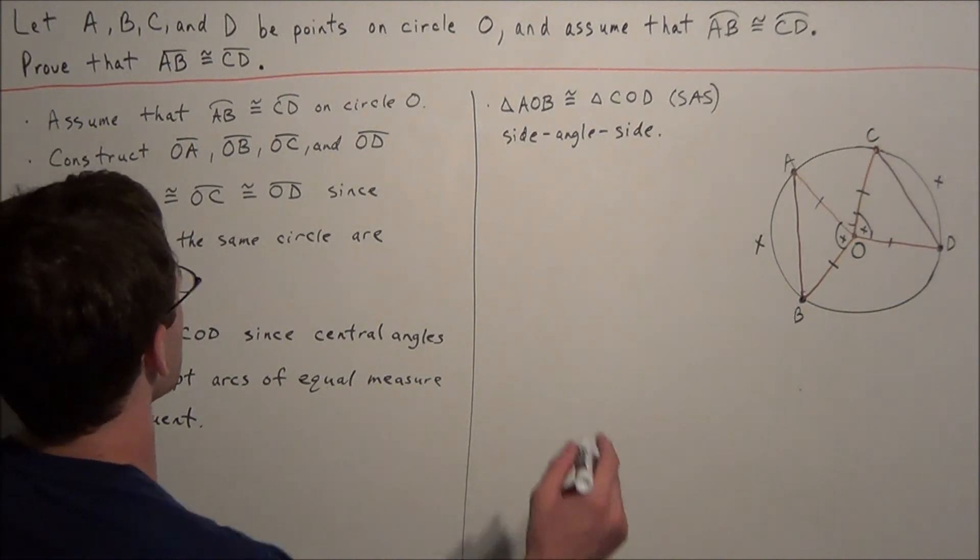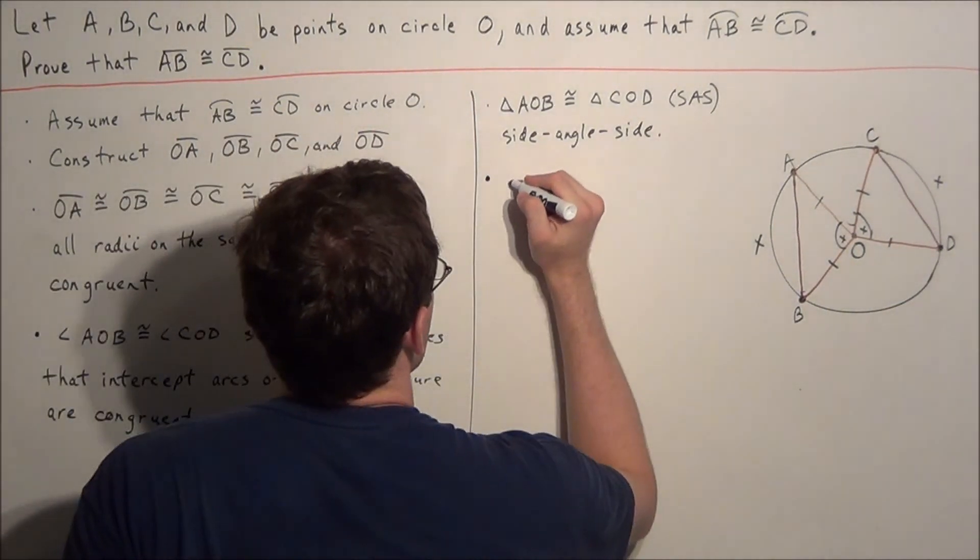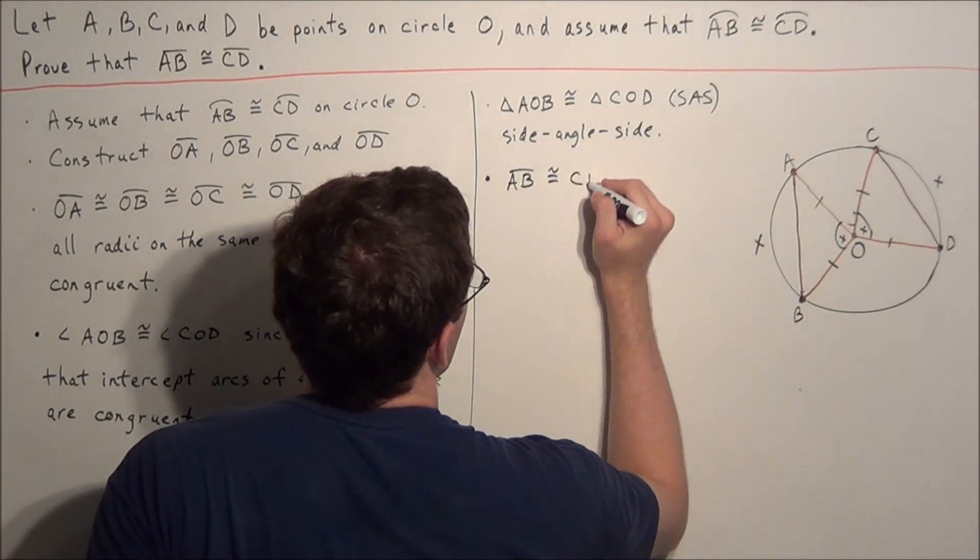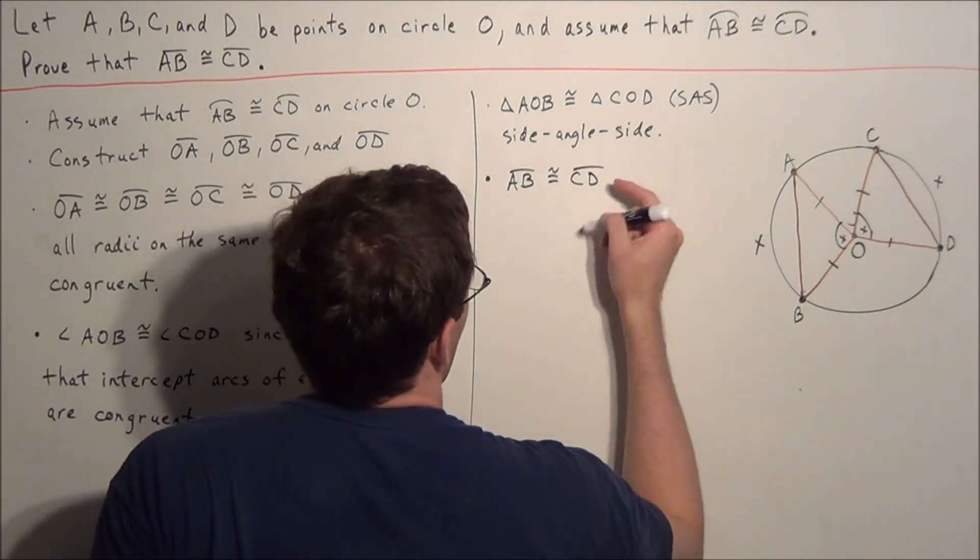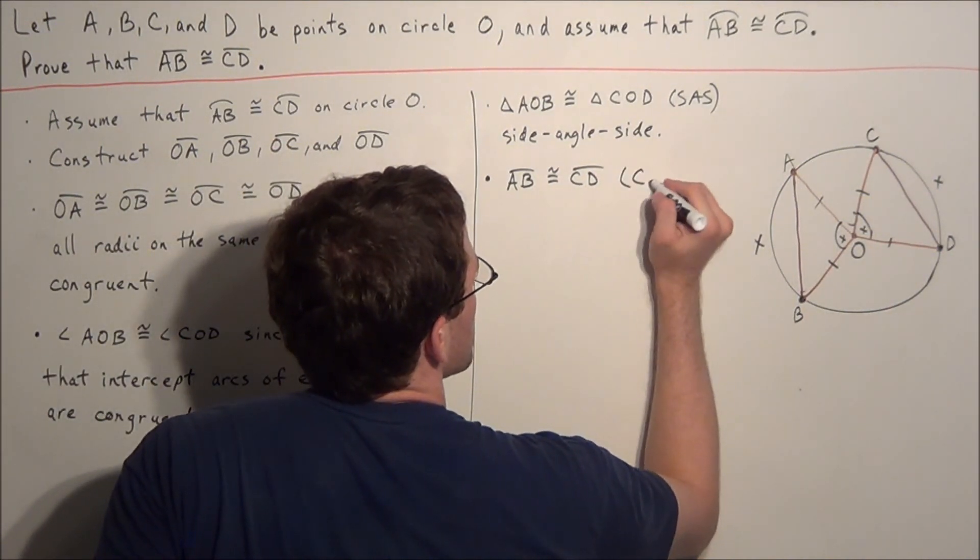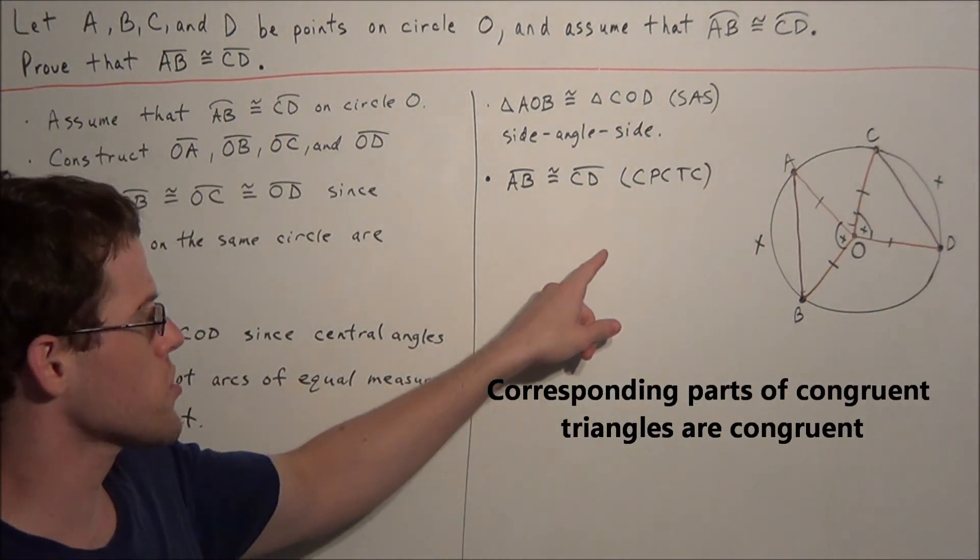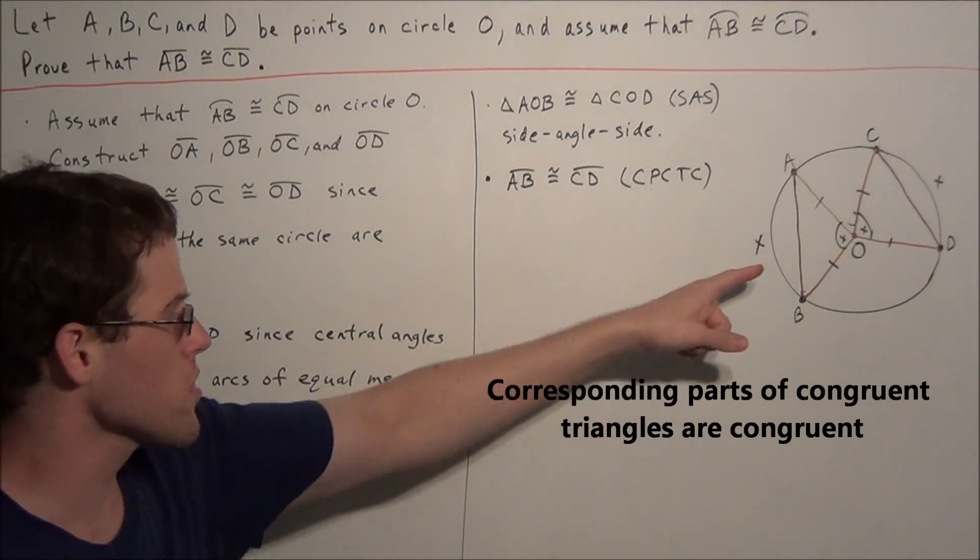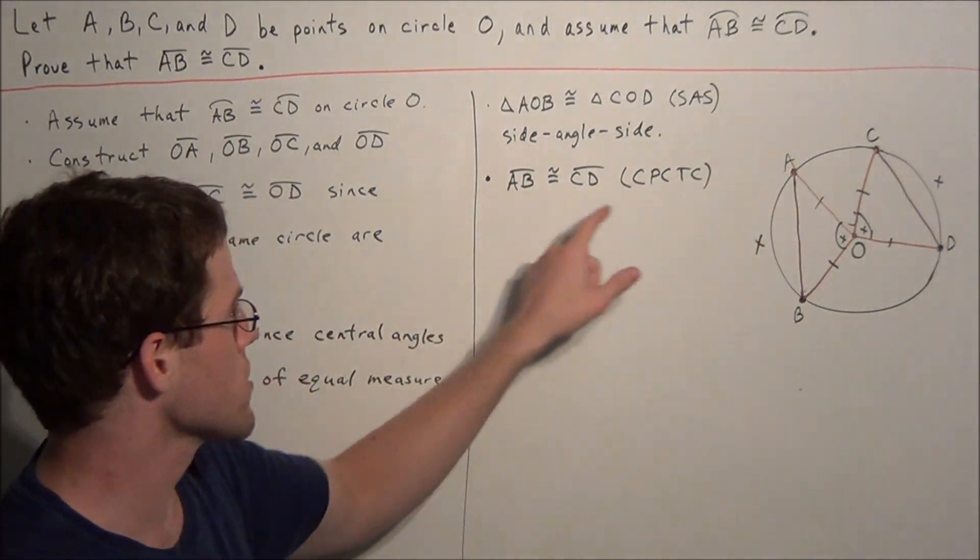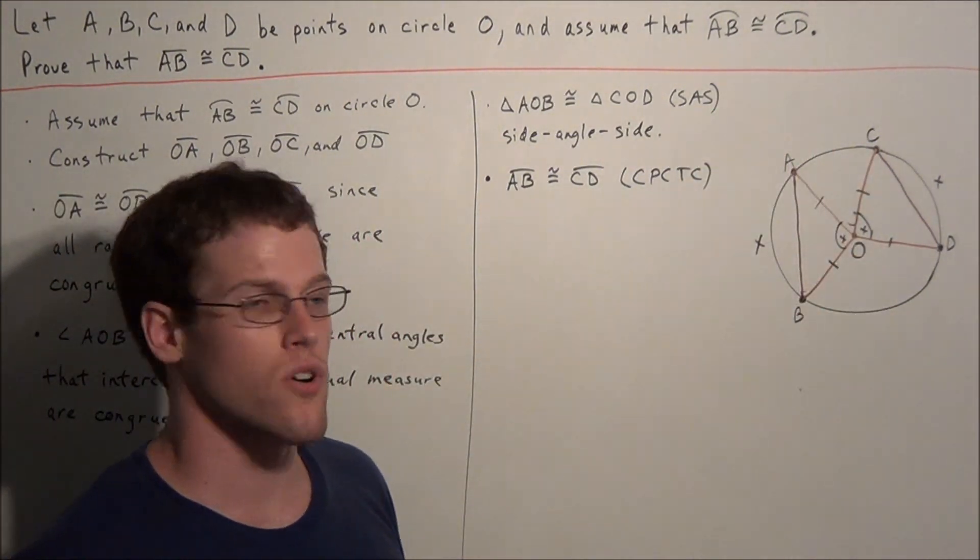But now this allows us to conclude this proof. So now we could finally say what we were trying to prove. This proves that chord AB is congruent to chord CD. And the reasoning behind this, we could say CPCTC, which stands for corresponding parts of congruent triangles are congruent. Once we know that two triangles are congruent, then their corresponding parts are also congruent. So this allows us to say that these two chords are also of equal measure.